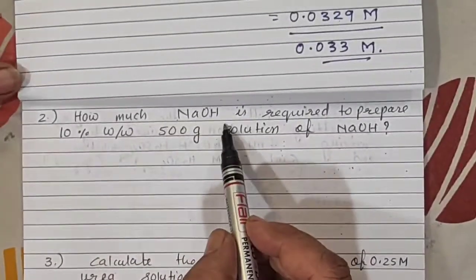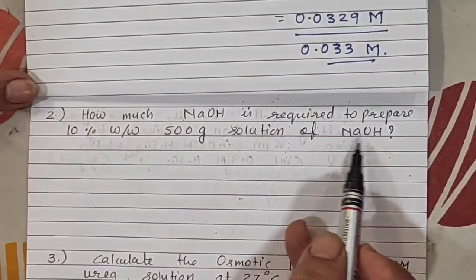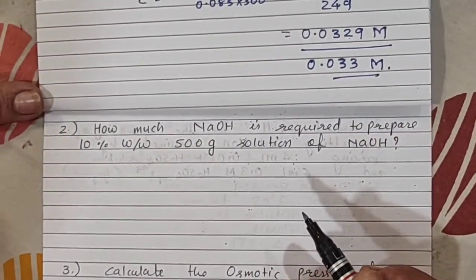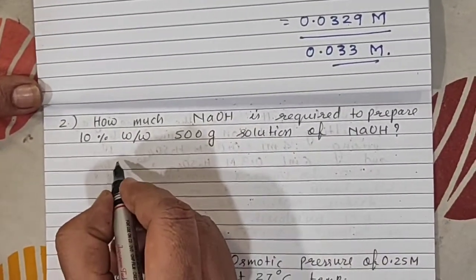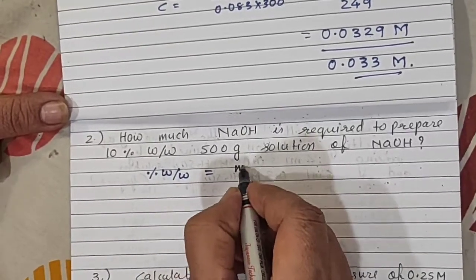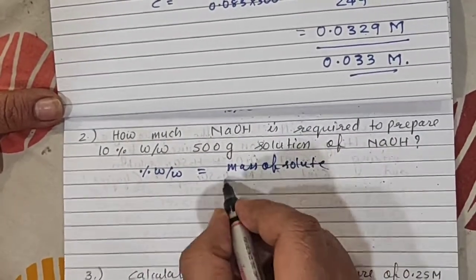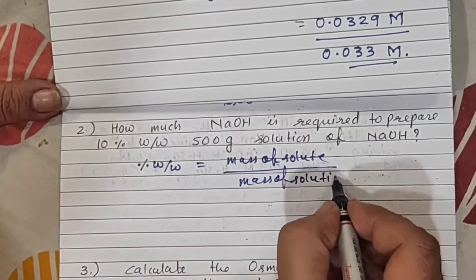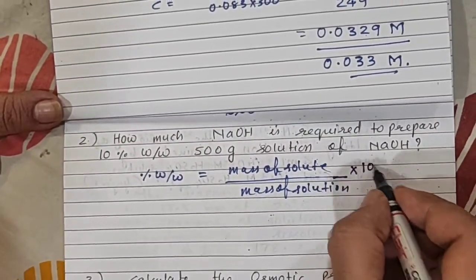Question is: how much NaOH is required to prepare 10% W/W 500 gram solution of NaOH? These questions seem to be very easy, but are asked in NEET exam or board exams. % W/W formula: mass of solute upon mass of solution times 100. As it is percent, so times 100. Very simple.